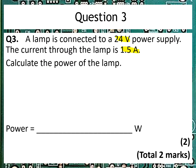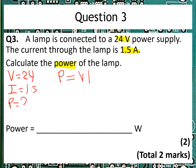So we've got the voltage and the current, and we've been asked to find the power. We know that V is equal to 24 and I is equal to 1.5, and we're trying to find power. So we're going to use the equation P equals VI. We stick the numbers in: P is equal to 24 multiplied by 1.5, and the answer therefore is 36. We're already given the units in the question.